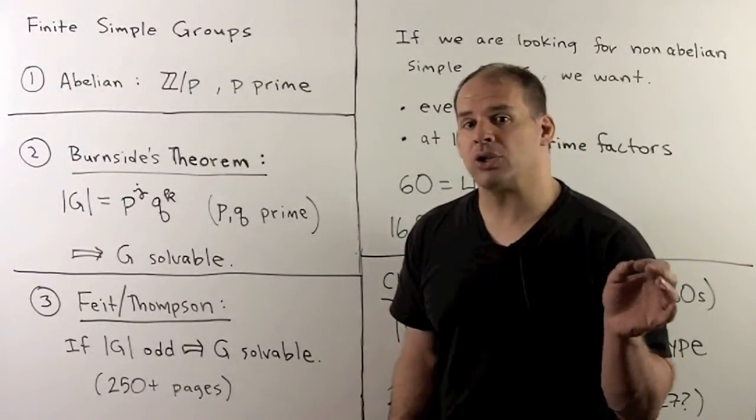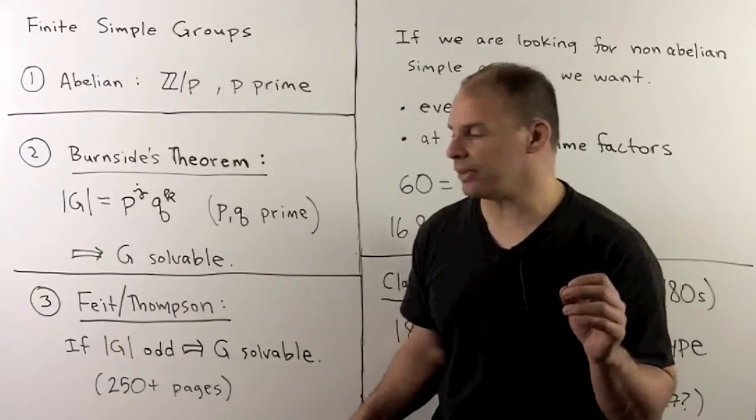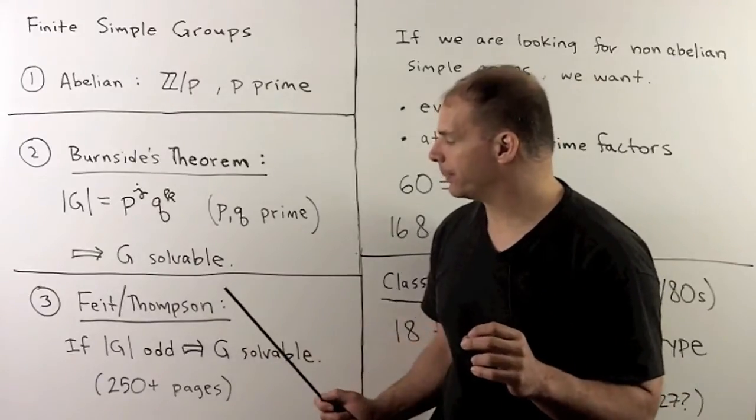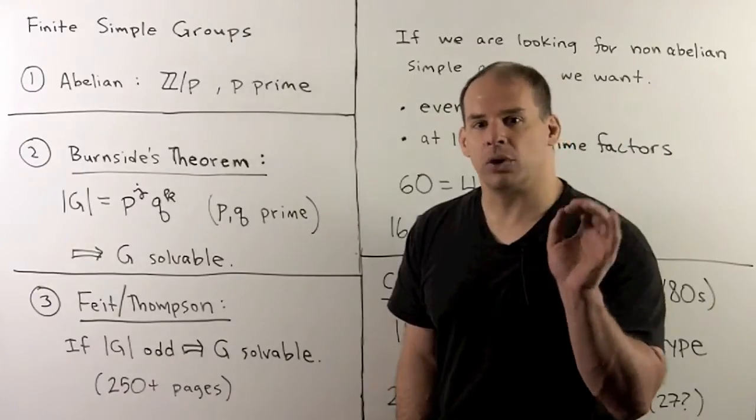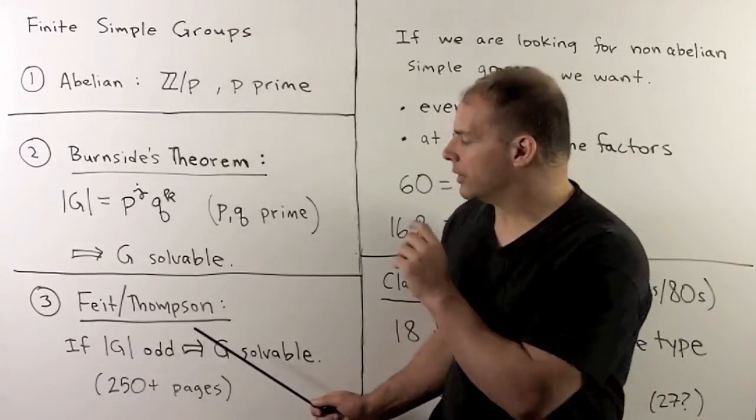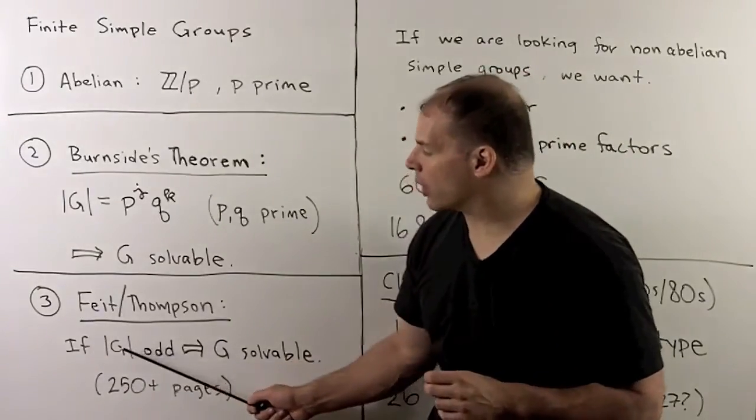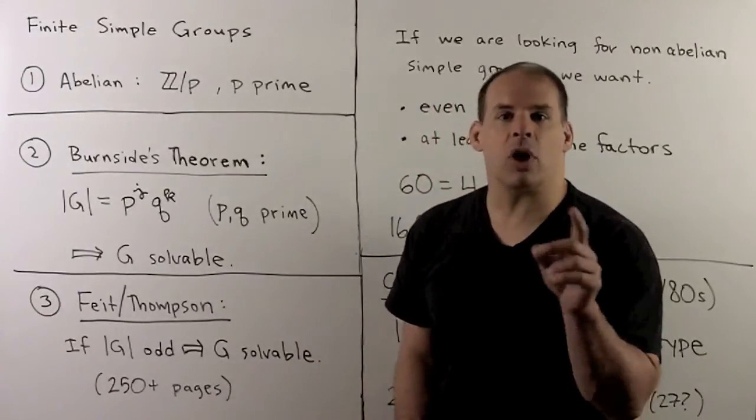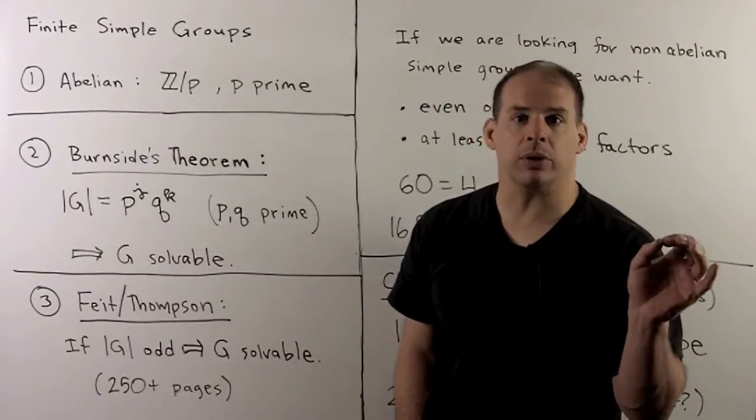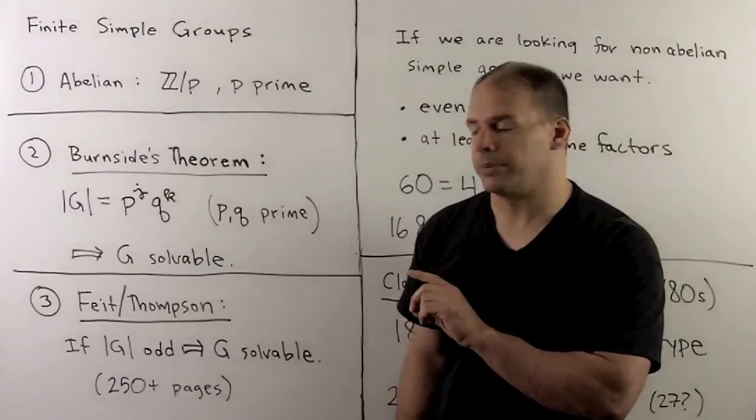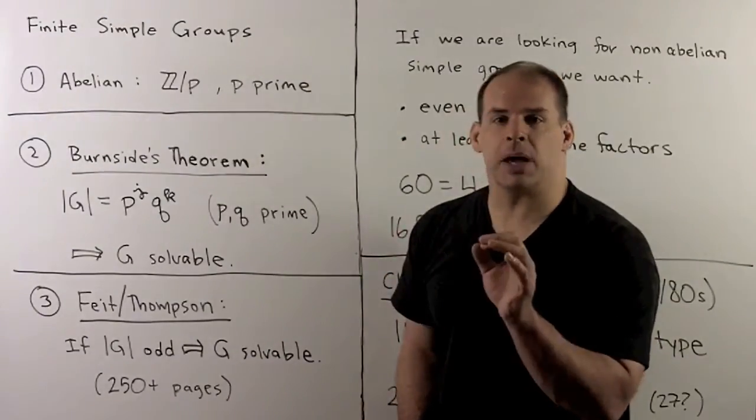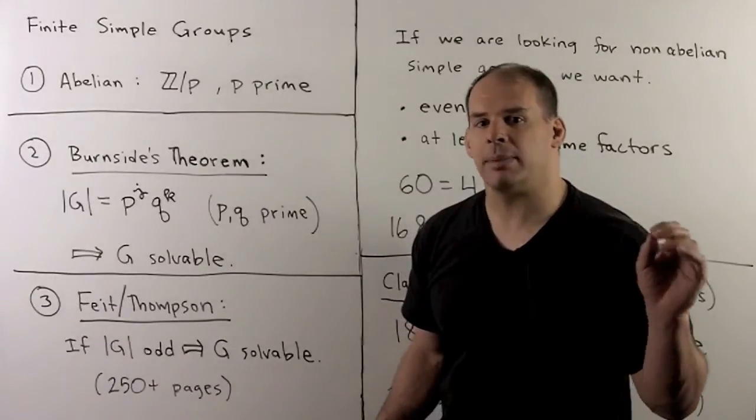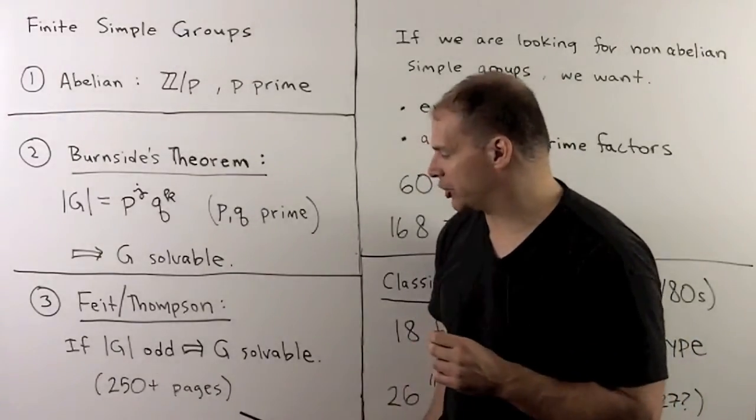Well beyond the undergraduate curriculum is the Feit-Thompson theorem, or Thompson-Feit. This is simple to state, but it's a difficult piece of work. So this says if the order of our group is odd, then we have automatically that our group is solvable. So simple to state. Now, for the proof, this takes up an entire issue of the Pacific Journal of Mathematics coming in at over 250 pages.